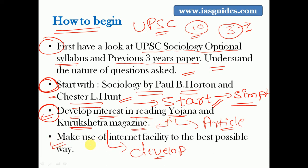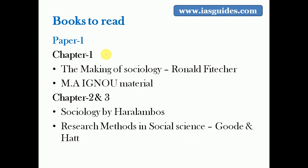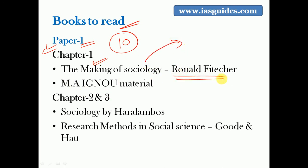Make extensive use of internet facility, which is available at very cheap cost nowadays - a very good initiative by the government. Now for the chapter-wise book list: once you cover the basic book by Paul Horton and Chester, move to standard books. Chapter one is related to the introduction of sociology and the discipline of sociology. For this, read The Making of Sociology by Ronald Fletcher and the introductory chapters from IGNOU MA material - not BA IGNOU material, but MA IGNOU material.